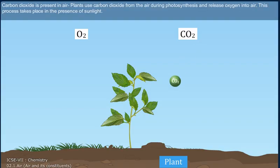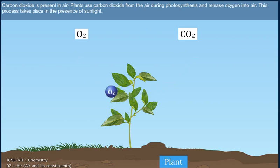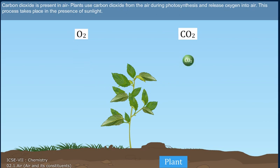Carbon dioxide is present in air. Plants use carbon dioxide from the air during photosynthesis and release oxygen into the air. This process takes place in the presence of sunlight.